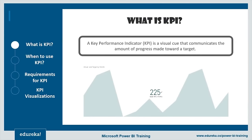A KPI basically demonstrates how effectively a company is achieving key business objectives. Organizations use KPIs at multiple levels to evaluate their success in reaching targets both internally and externally. High-level KPIs focus on the overall performance of the enterprise, while low-level KPIs may focus on internal things like employees in departments such as sales and marketing.